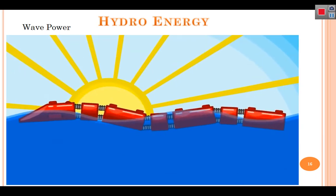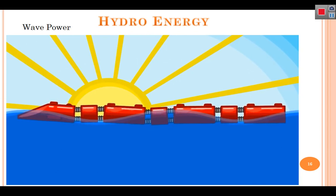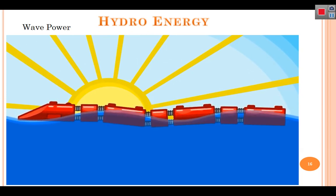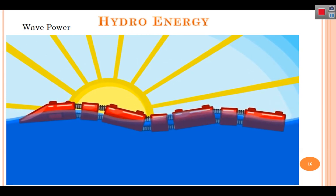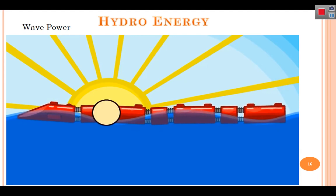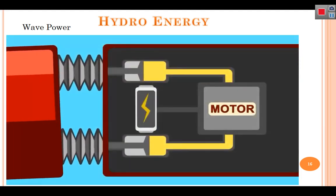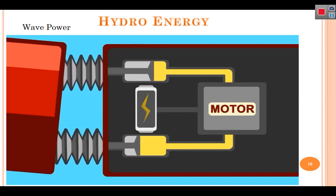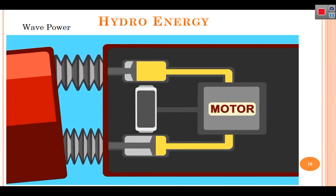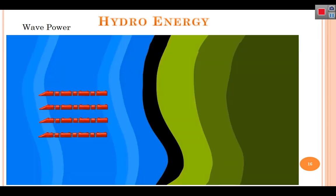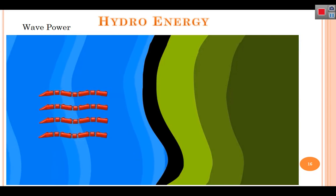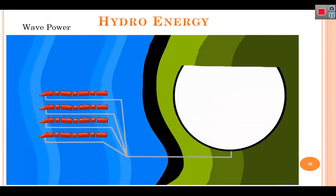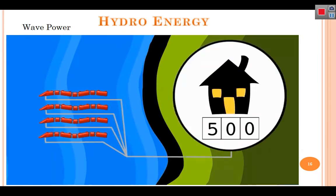The attenuator rig sits on the ocean's surface with a snake-like appearance. Each section is connected by a joint that allows it to undulate along waves. The wave movement pushes and pulls hydraulic cylinders, causing fluids to compress into high-pressure accumulators and creating an electrical current. The attenuator was the first wave power generator for commercial use and can power up to 500 homes per unit.